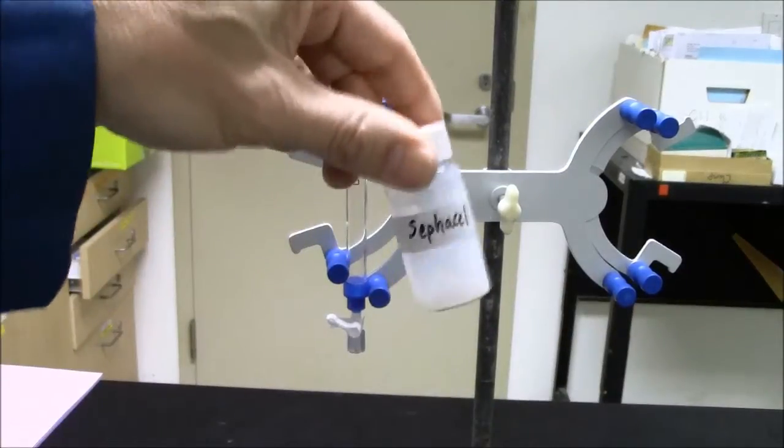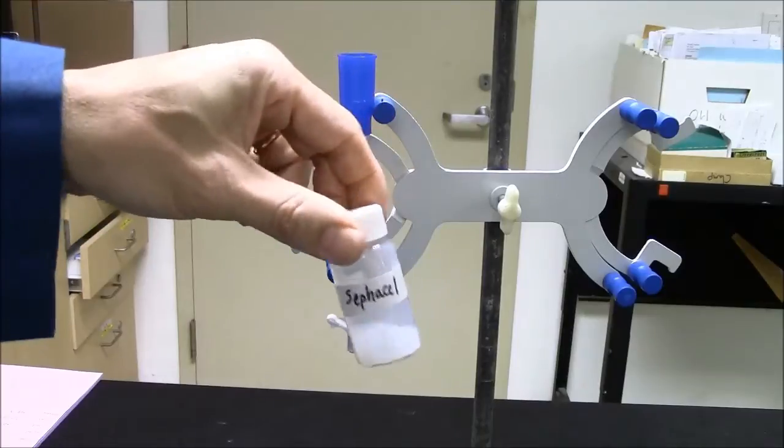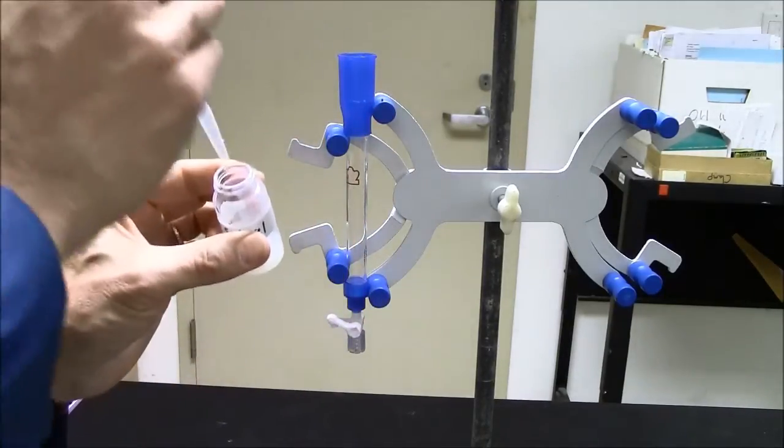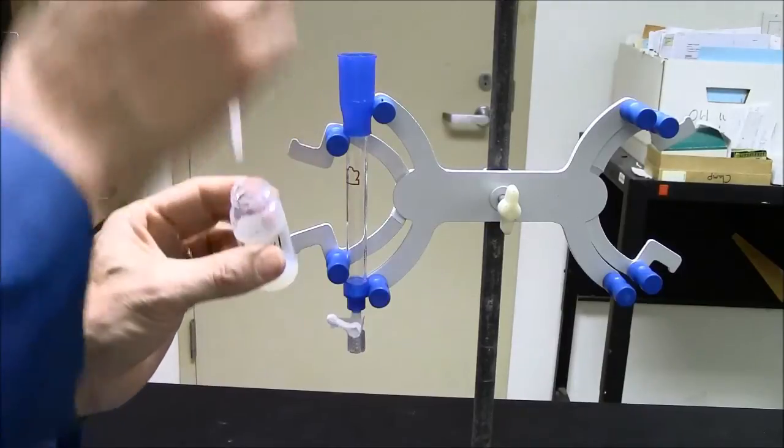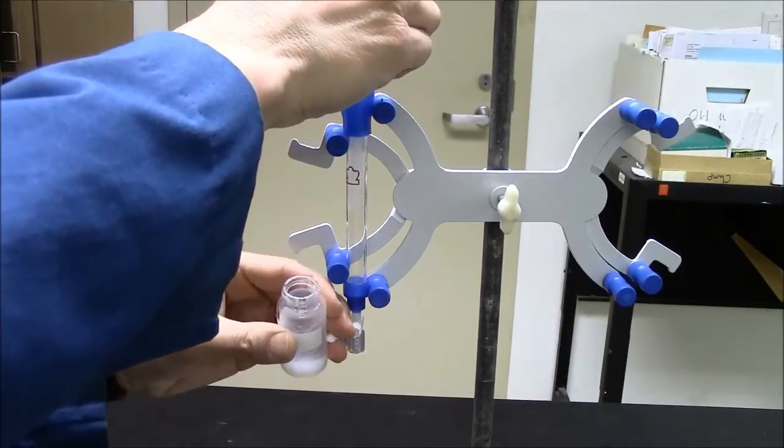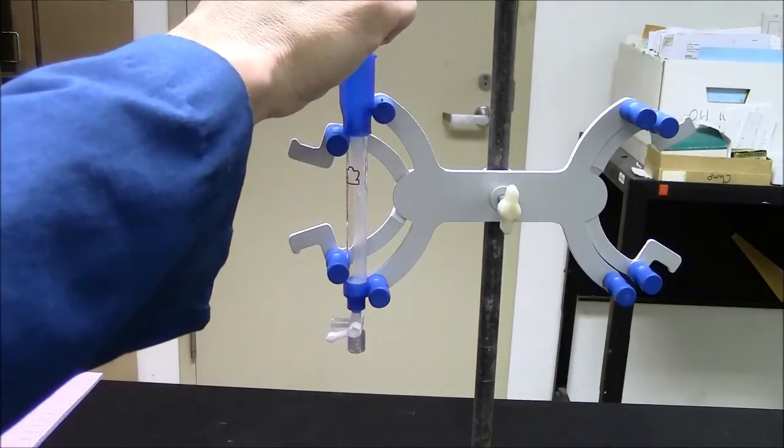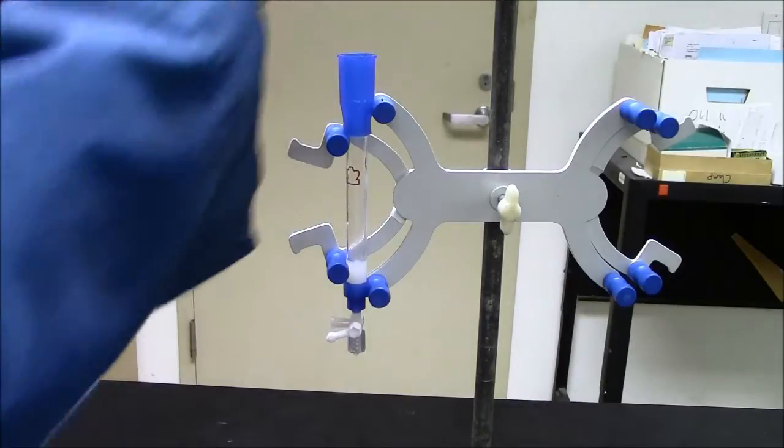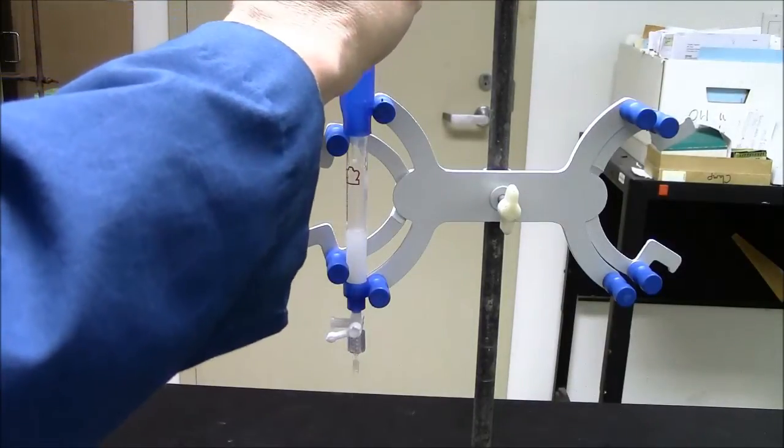To load my gel, I'll first swirl my gel to get it suspended, and then I'll take my sawed-off pipette and add to the column. So I'll start with two pipettefuls, and then I'll see what I have.